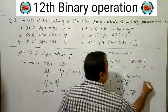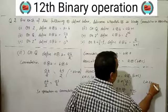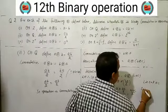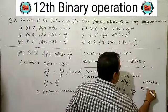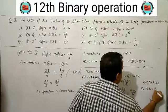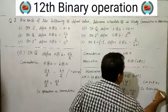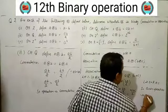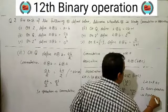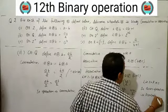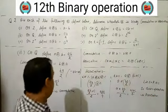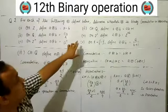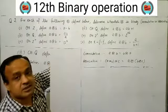Left hand side equals right hand side. So the given operation a★b = AB/2 is both associative and commutative.